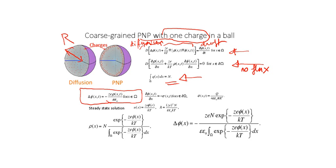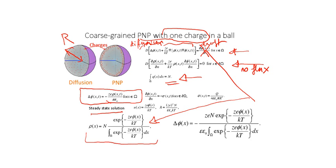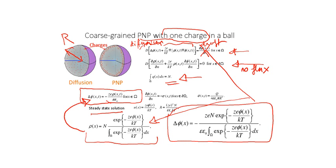We impose the compatibility condition: d(phi)/dn equals minus sigma, where sigma equals the total charge divided by 4 epsilon epsilon-zero pi R-squared, with R the radius of the sphere. At steady state this term equals zero. We obtain the classical Boltzmann solution, normalized so the integral of rho equals N. Substituting into the Poisson equation, we obtain the steady-state Poisson-Planck equation connecting phi with the exponential of phi. The remaining goal is to find the solution of this equation in the non-electroneutrality context.